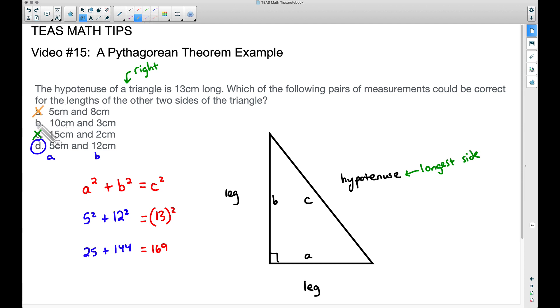These other two up here will not work. And just to check those real quick, if we take 5 squared plus 8 squared, I'm taking A squared plus B squared. 5 squared is 25. 8 squared is 64. And this is not equal to 169.